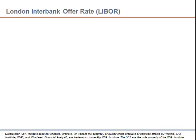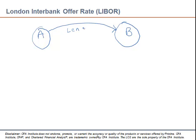Now let's understand what LIBOR is. LIBOR stands for London Interbank Offered Rate. If there are two banks A and B, and A lends dollars to B — something which happens every day across the globe — A would quote the interest rate in LIBOR. Whenever banks lend dollars to another bank, they quote the interest rate as LIBOR plus a particular percentage.